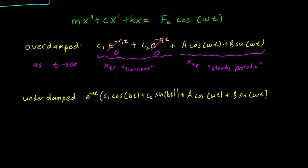Similarly, in the underdamped case, we have a solution of this type: e^(−at)·[C1·cosine(bt) + C2·sine(bt)] plus A·cosine(ωt) and B·sine(ωt).